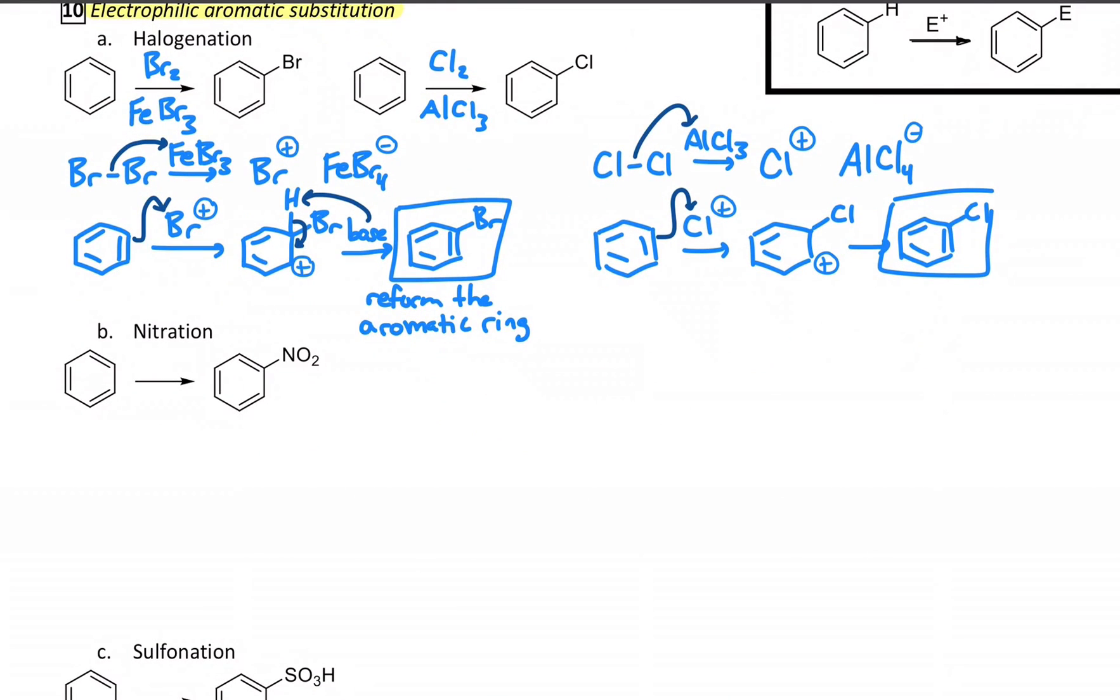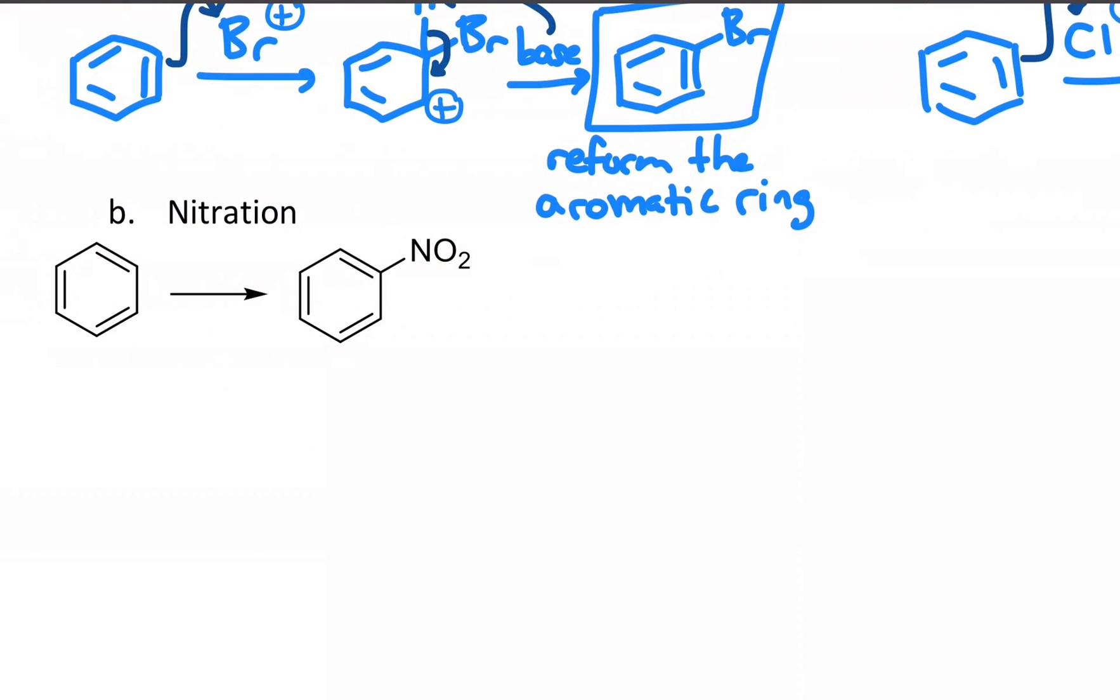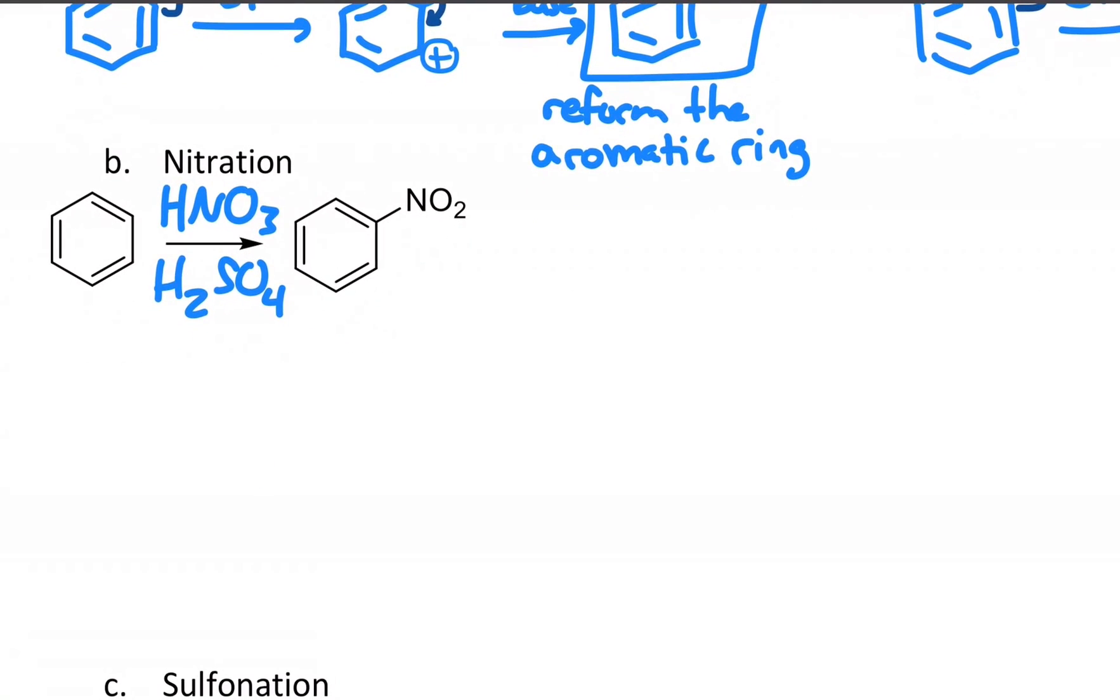A common thing that chemists do to delocalize electrons and make the ring very electron poor is a nitration reaction to add a very electron withdrawing nitro group. That's done with two very strong acids: nitric acid and then sulfuric acid are the common reagents for this. And the first thing that happens is those two things mix.